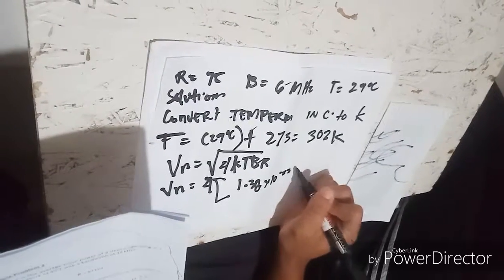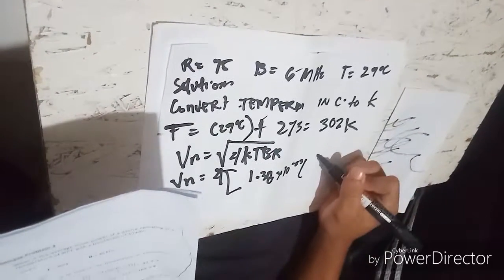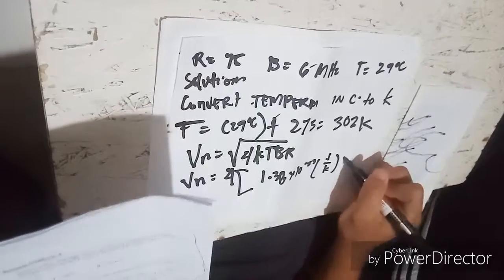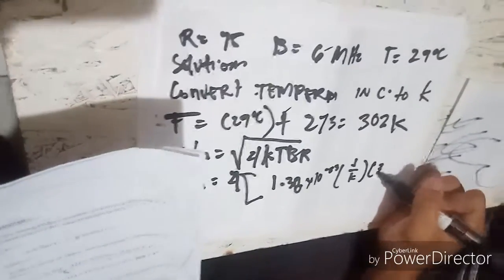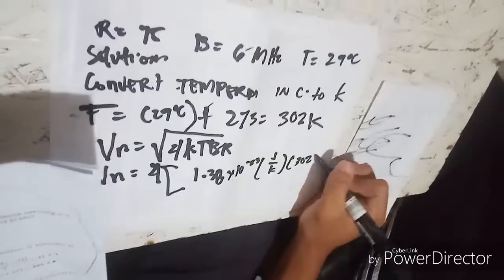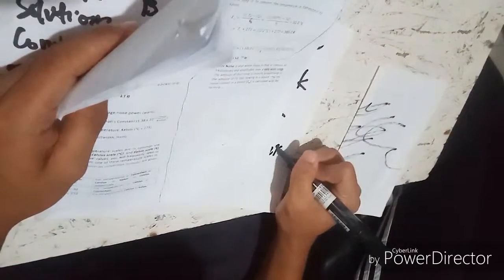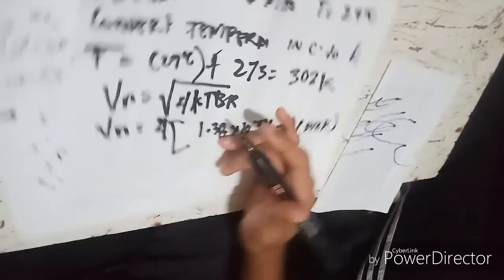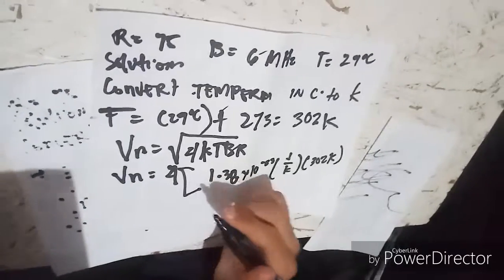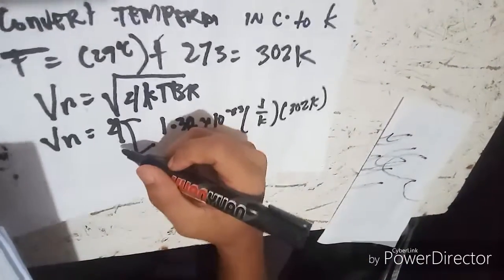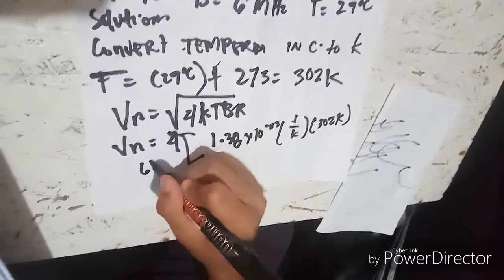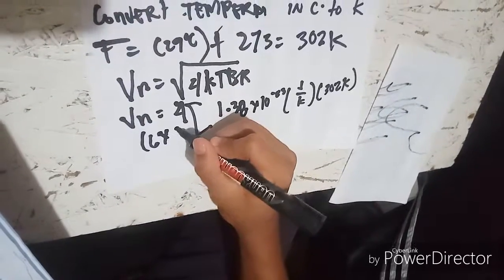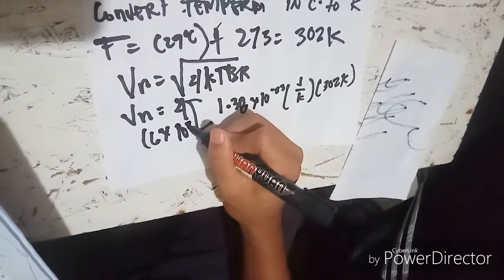Times 302 kelvin times 6 times 10 to the 6 power times 75.